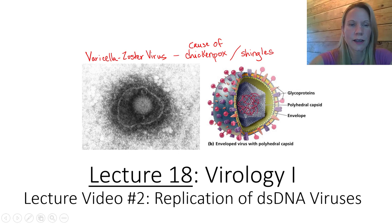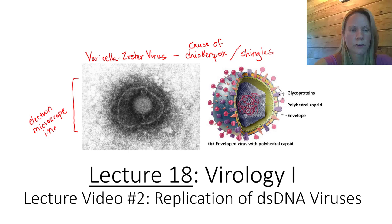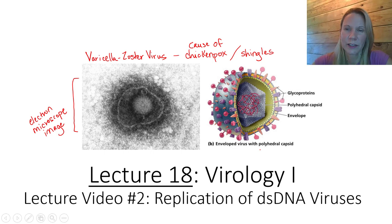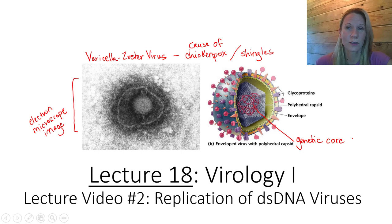Pictured here we're seeing how it appears under an electron microscope. So this is an electron microscope image, and then we see here the cartoon image. Let's review quickly some of the terminology we learned in the first video. We learned that all viruses have a genetic core, and that genetic core can be DNA or RNA, double-stranded or single-stranded. The focus of this video is on double-stranded DNA viruses, which is the case for the varicella zoster virus.